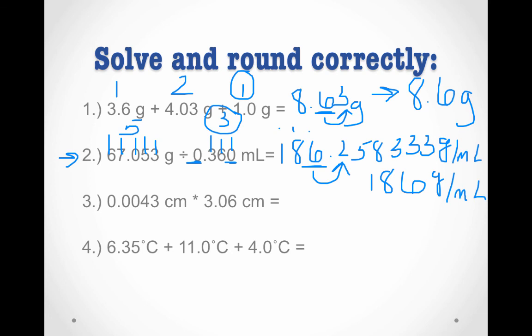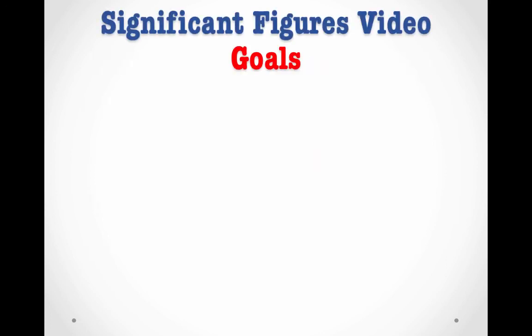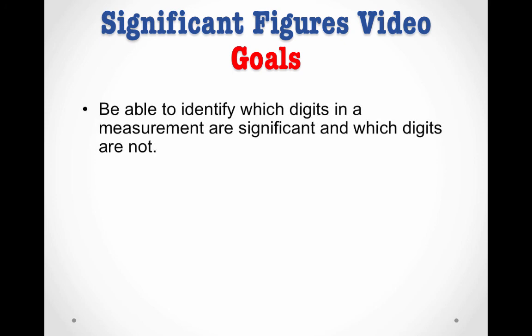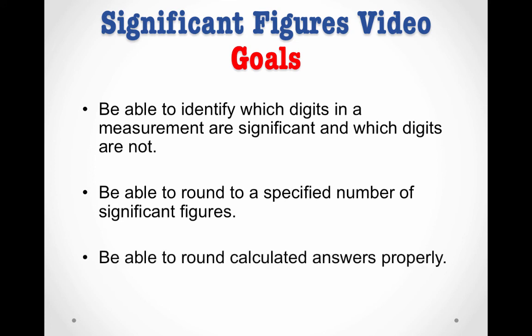Pause the video here and try the last two on your own. When you come back, I'll reveal the answers. This is what you should have gotten. Again, if you got these all right, great — if not, we'll practice in class. That brings us to the end of our sig fig video. Let's review our goals. First, we learned to identify which digits in a measurement are significant and which digits are not — those rules are posted on the course website. Then we learned to round to a specified number of sig figs, in order to be able to round our calculated answers properly. Addition and subtraction, we go by decimal places. Multiplication and division, we go by sig figs.